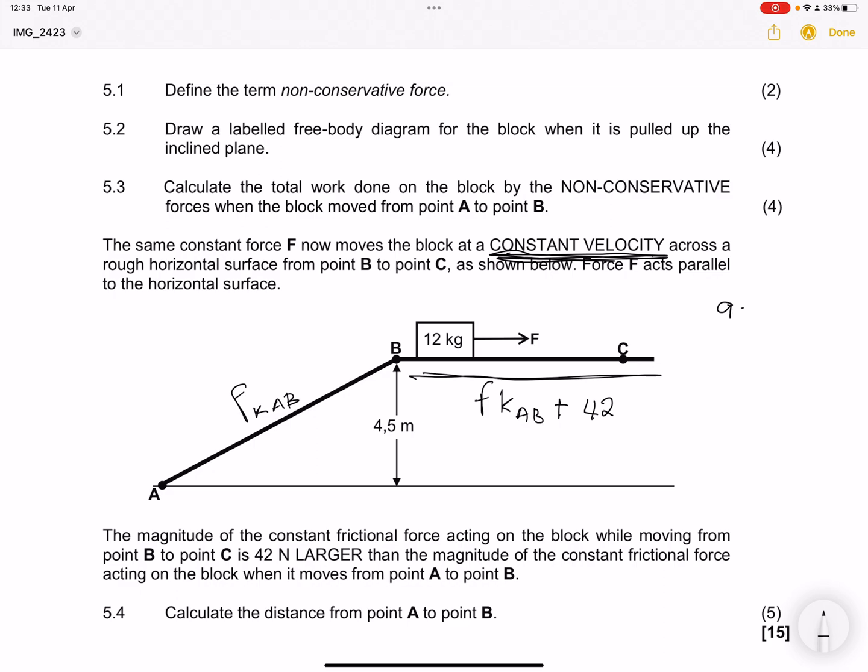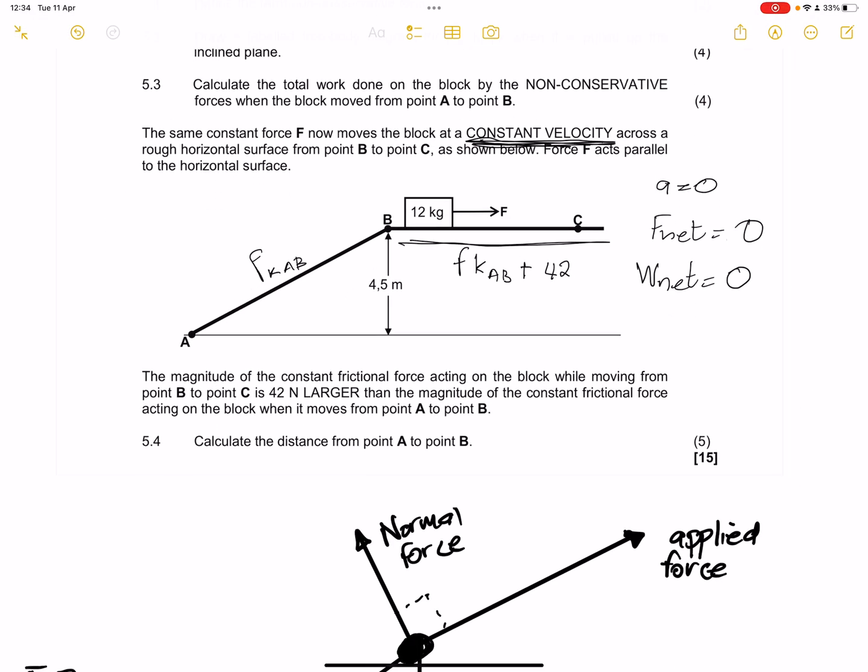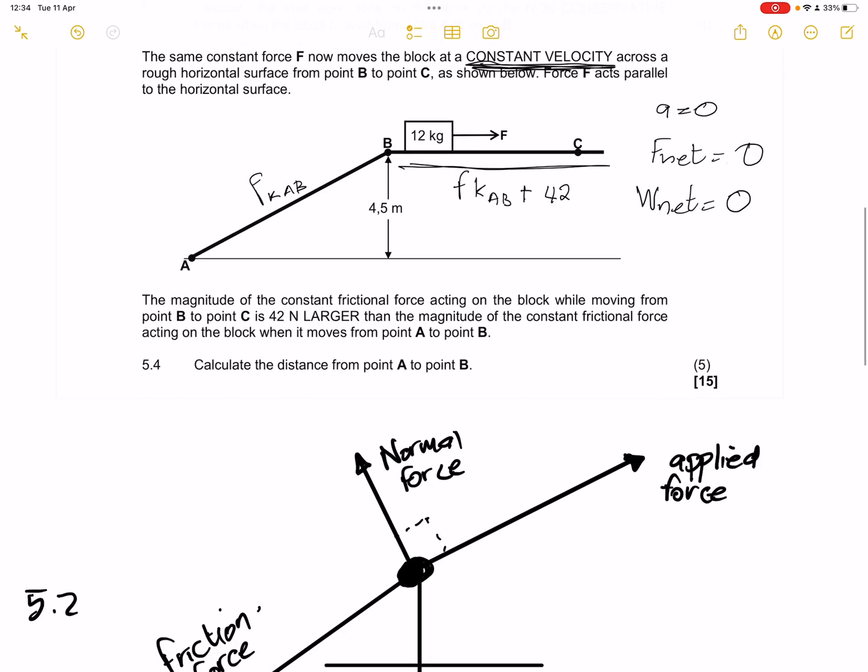Now they're saying to us, once we get to this point here, the frictional force is the same as AB, but only 42 newtons larger. So it's actually the friction AB plus 42 newtons. That's the amount of friction that is there. But remember that we are at a constant velocity there. So what does it mean? Remember, the moment we say constant velocity, we say acceleration is zero. And if acceleration is zero, it means that F net, which is equal to MA, if A is zero, then it makes this entire thing become zero.